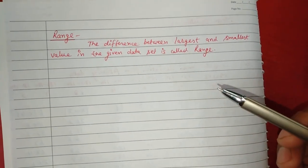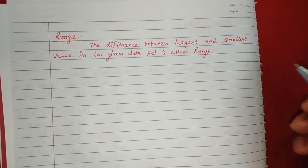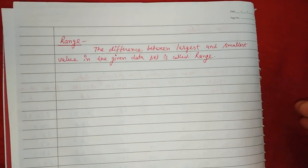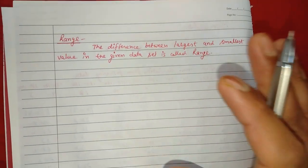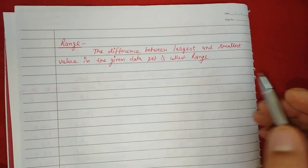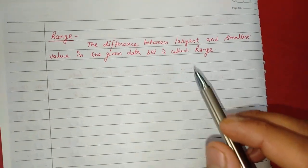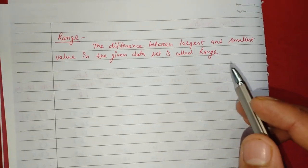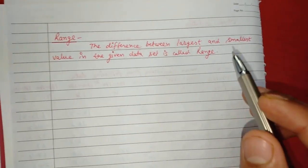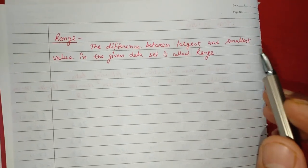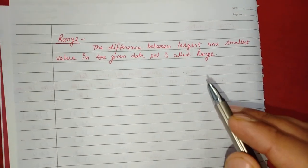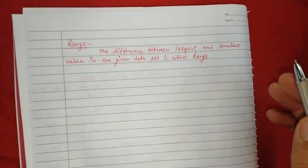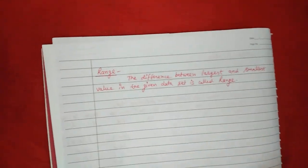The range is the difference between the largest and the smallest value in the given data set. Whatever data you have given, the biggest value minus the smallest value is the range.